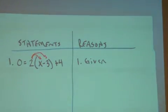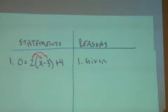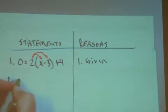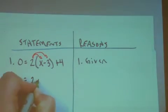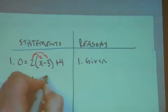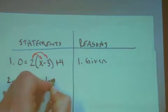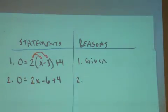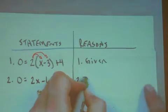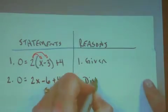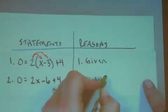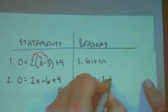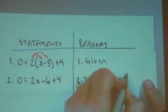Do you remember what that one's called? It takes me to my second statement that 0 is equal to 2x minus 6 plus 4. That's the distributive property of equality.